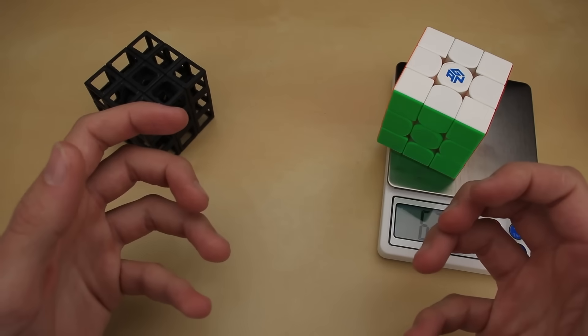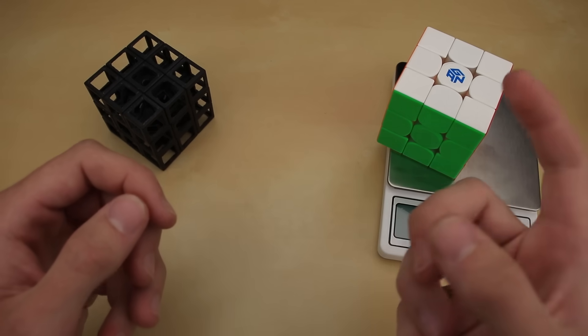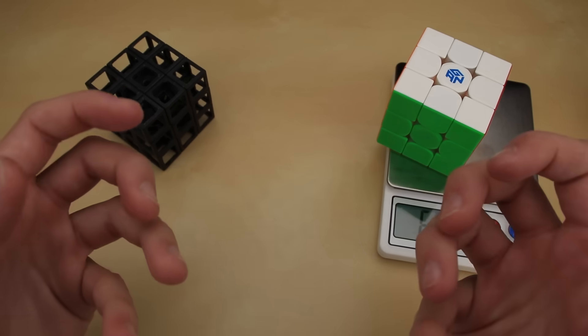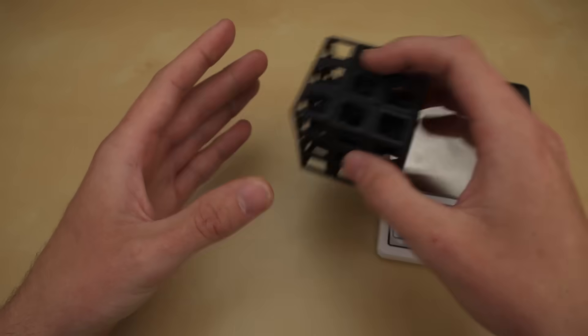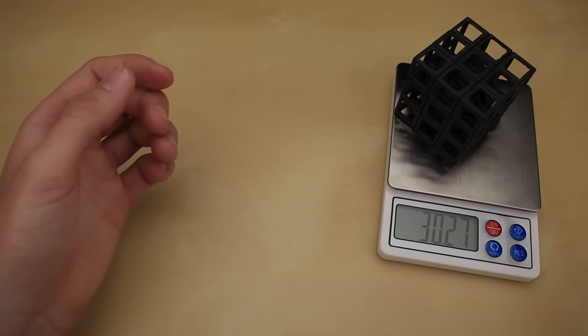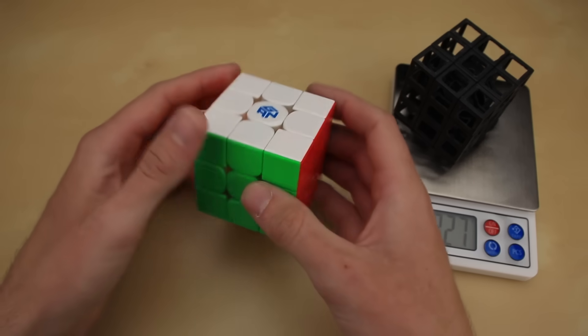weighs just 63 grams. The idea is that the lighter the pieces, the less force it takes to turn them and thus the faster the cube feels. Now how much does this ultra light cube weigh? Just over 30 grams, less than half of the weight of an already super light speed cube.